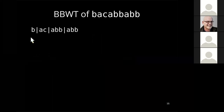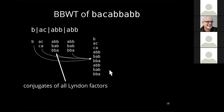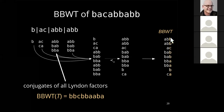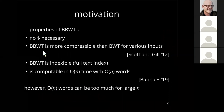With all ingredients in place for the BBWT: we first compute the Lyndon factorization of the input text, then take all conjugates (cyclic shifts) of each Lyndon word, put them into a list, and sort with respect to the omega order. We then take the last character of each element in this list; reading top to bottom gives the BBWT. Comparing with the standard BWT, there is no dollar sign and the shape differs. Scott and Gill found that it is more compressible than the BWT for various inputs.